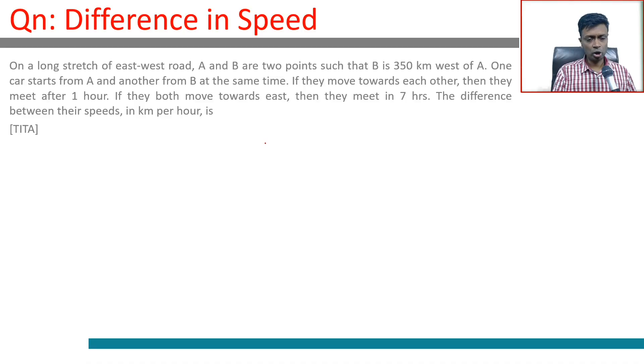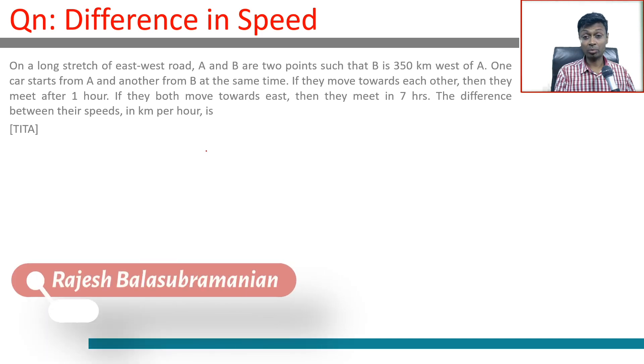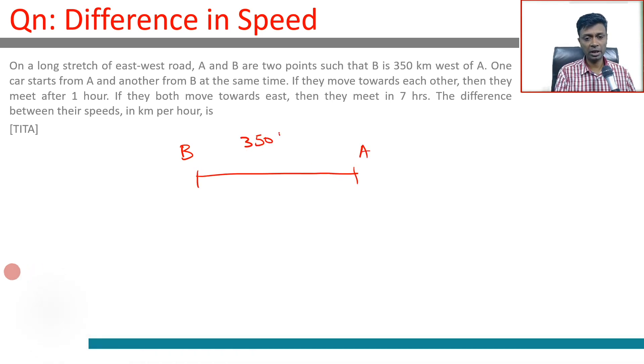Let's look at this one, difference in speed. On a long stretch of east-west road, A and B are two points such that B is 350 km west of A. So B here, A here, 350 km is the distance between B and A.